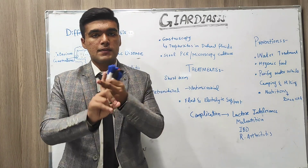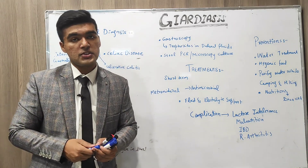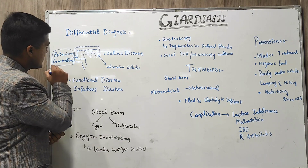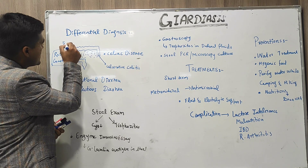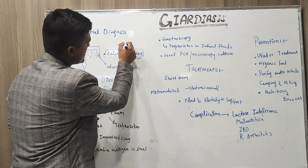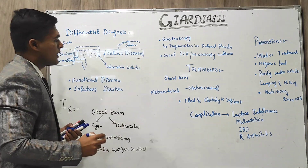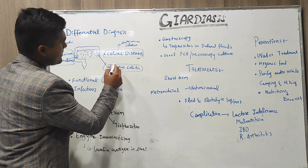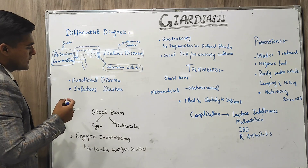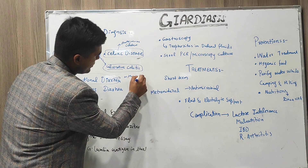Now let us discuss differential diagnosis. The differentials include rotavirus gastroenteritis, which is a major form causing similar symptoms in children. Celiac disease is an autoimmune disease in which the immune system attacks when gluten is eaten. Ulcerative colitis involves ulcers developing in the walls and layers of the intestine. Functional diarrhea is diarrhea that develops without known causes. Infectious diarrhea is due to some infection with particular symptoms.